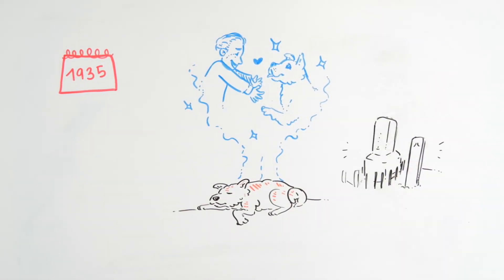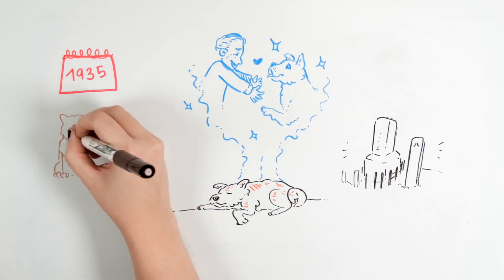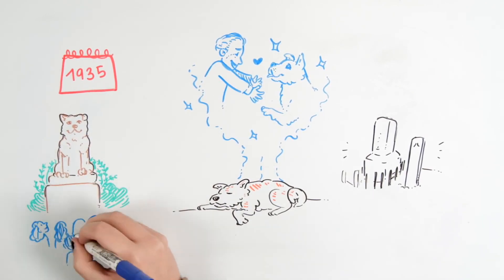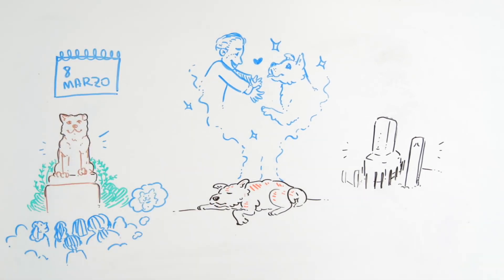A monolith with his name was built next to the professor's grave. Unfortunately, during World War II, Hachiko's bronze statue had to be melted down to make weapons. But in 1947, another bronze statue was erected at the 8th entrance of Shibuya Station.